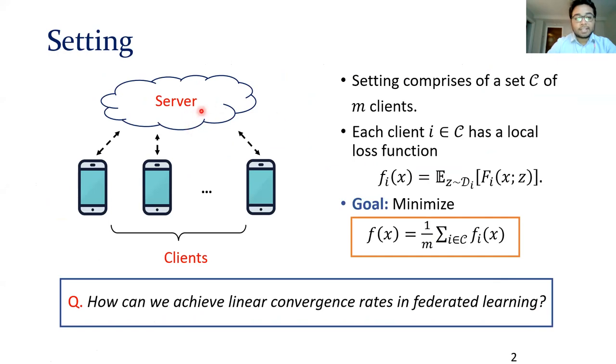In a standard federated learning setting, we have a central server and a bunch of clients. Each client i has a local loss function fi(x) that's defined as an expectation with respect to a client-specific distribution D sub i. The goal is to find one common statistical model that essentially solves this distributed optimization problem, while keeping the raw data of the clients localized at the clients themselves due to privacy. The key question we are after in this talk is: how can we achieve linear convergence rates in federated learning, and how do such rates compare with that of a centralized baseline?